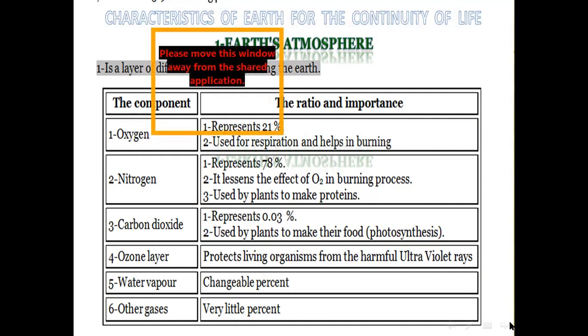Oxygen gas represents 21 percent or one over five the volume of air. Its importance is for respiration process and helps in combustion or burning. Nitrogen is the most abundant gas because it represents 78 percent or four over five from the volume of the atmosphere. Nitrogen gas doesn't help in burning, so it reduces or decreases the effect of oxygen burning. Nitrogen is also used by plants to make proteins.